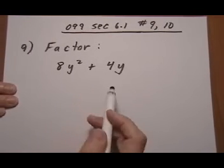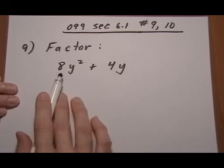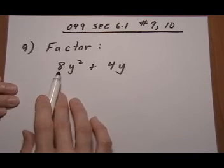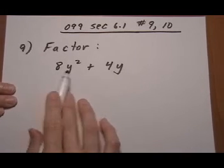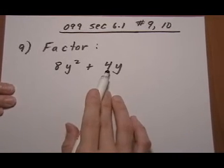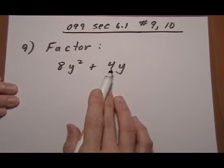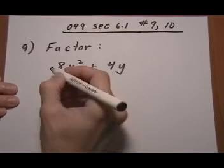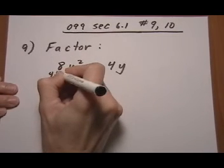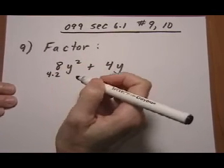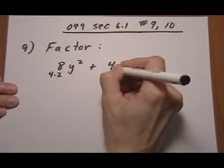The first thing I usually do is look at the numbers and think about the different factorings. 8 can be written as 8 times 1, or 4 times 2. 4 can be written as 4 times 1, or 2 times 2. So to have the greatest common factor, I'm going to think of 8 as 4 times 2, and 4 as just 4 times 1.